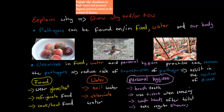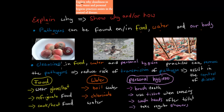The next topic is: explain why cleanliness in food, water, and personal hygiene practices assist in the control of disease. 'Explain' means show why and how. First you should know that pathogens can actually be found in water, in food, or on our body — pathogens are the things that can cause disease. So if we have cleanliness in food, water, and personal hygiene, that means we can remove the pathogens.